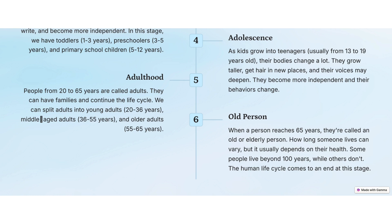When a person reaches 65 years old, they are called an elderly person. How long someone lives can vary but usually depends on their health — some people live beyond 100 years while others don't. The human life cycle comes to an end at this stage.